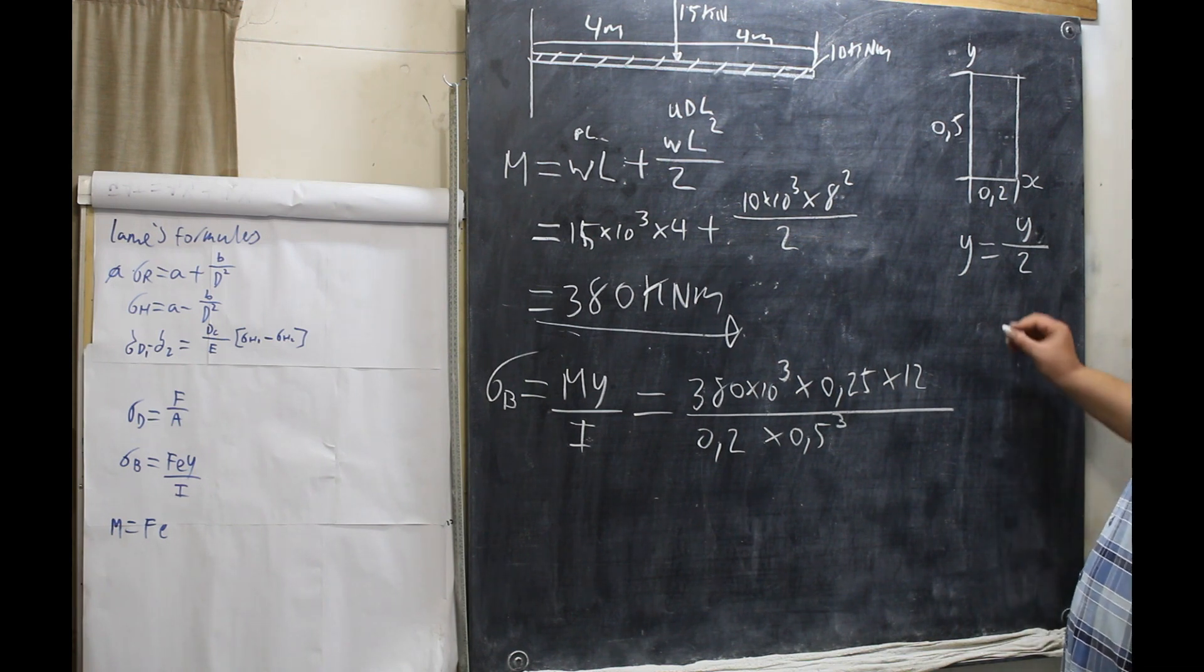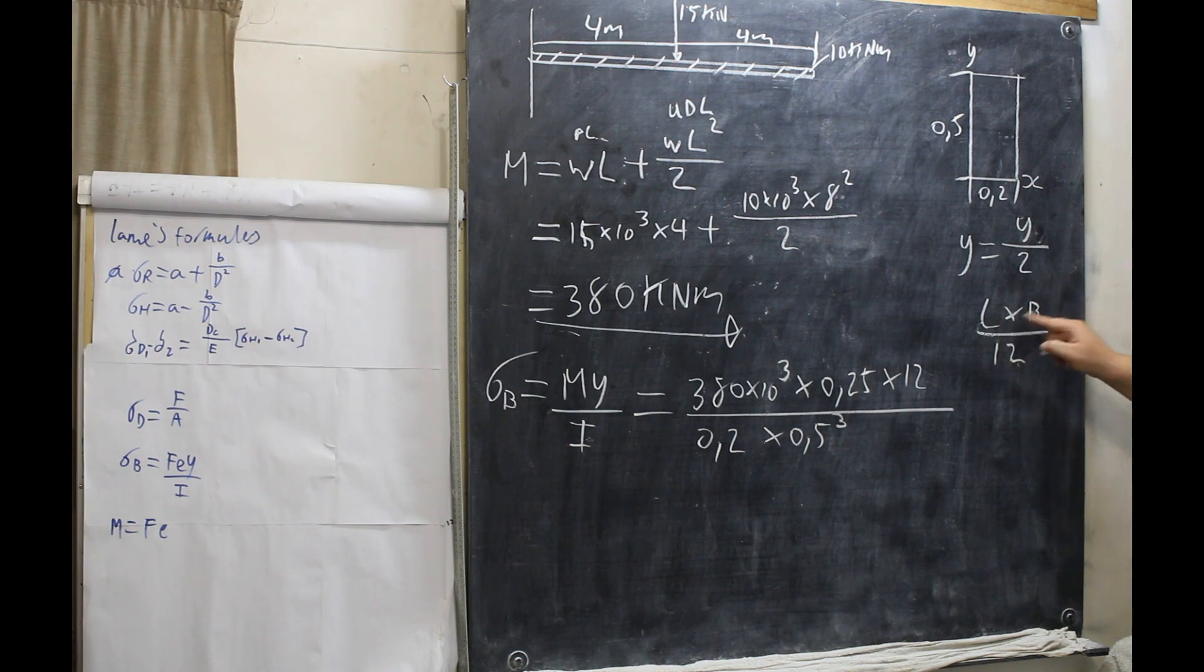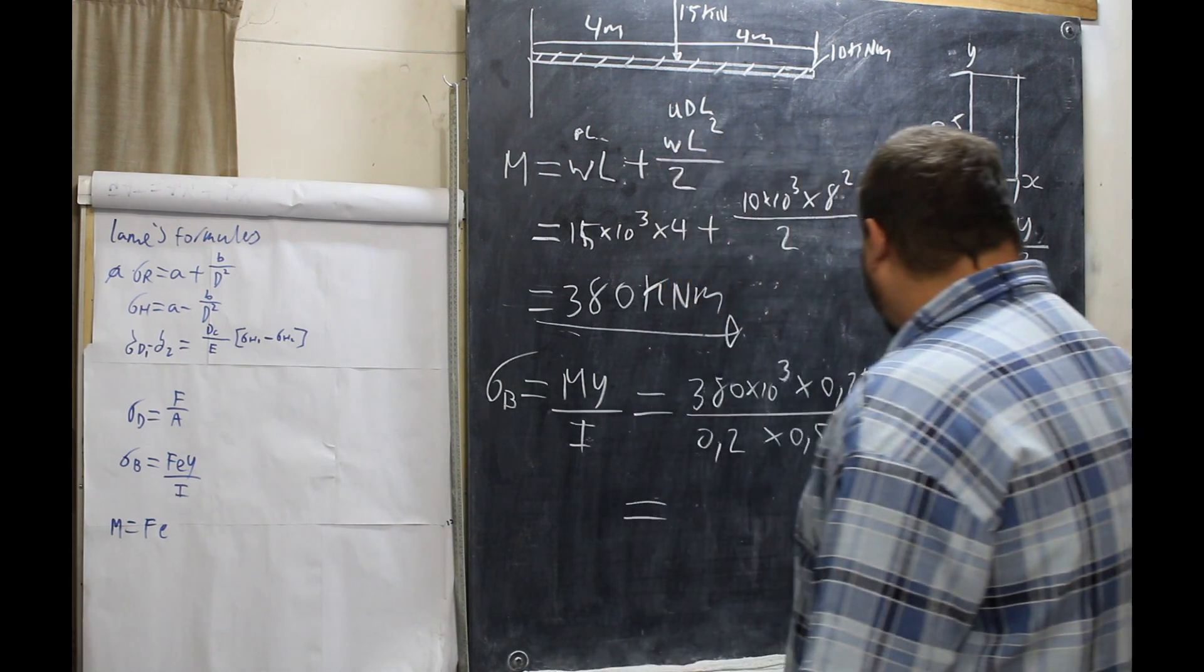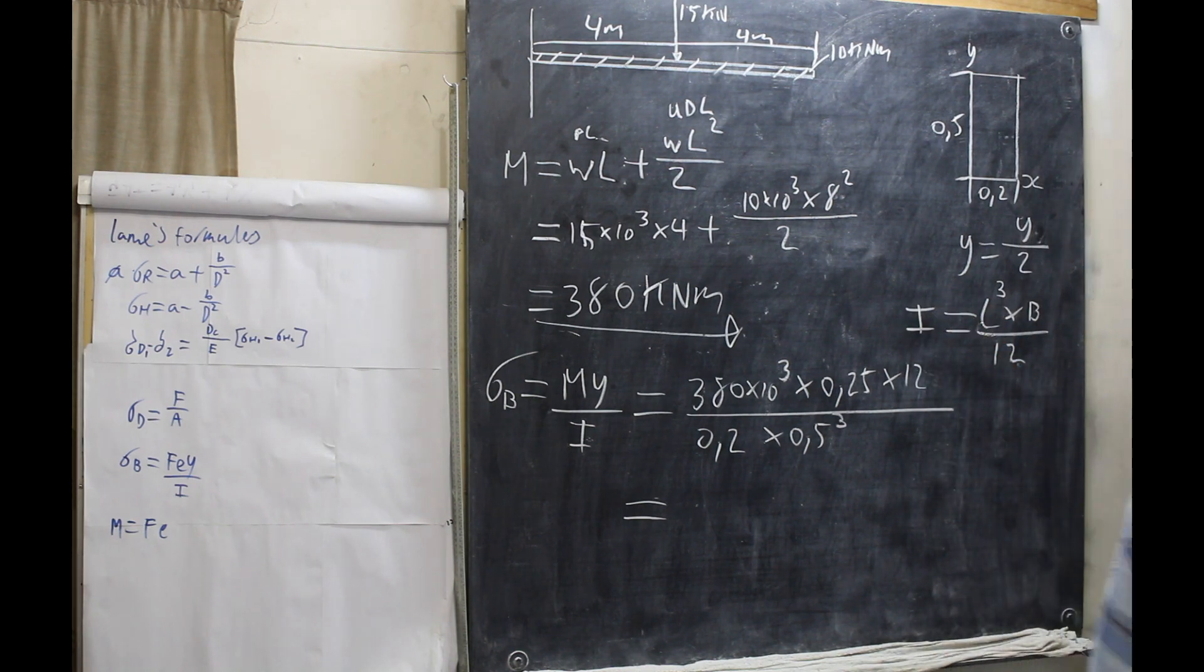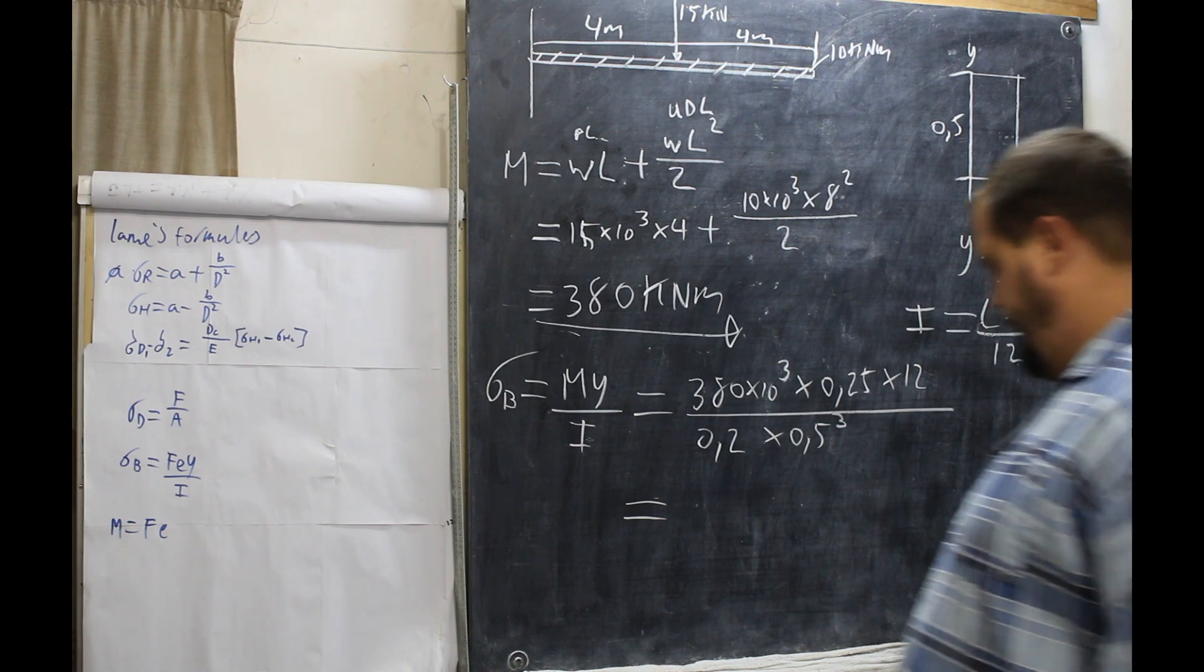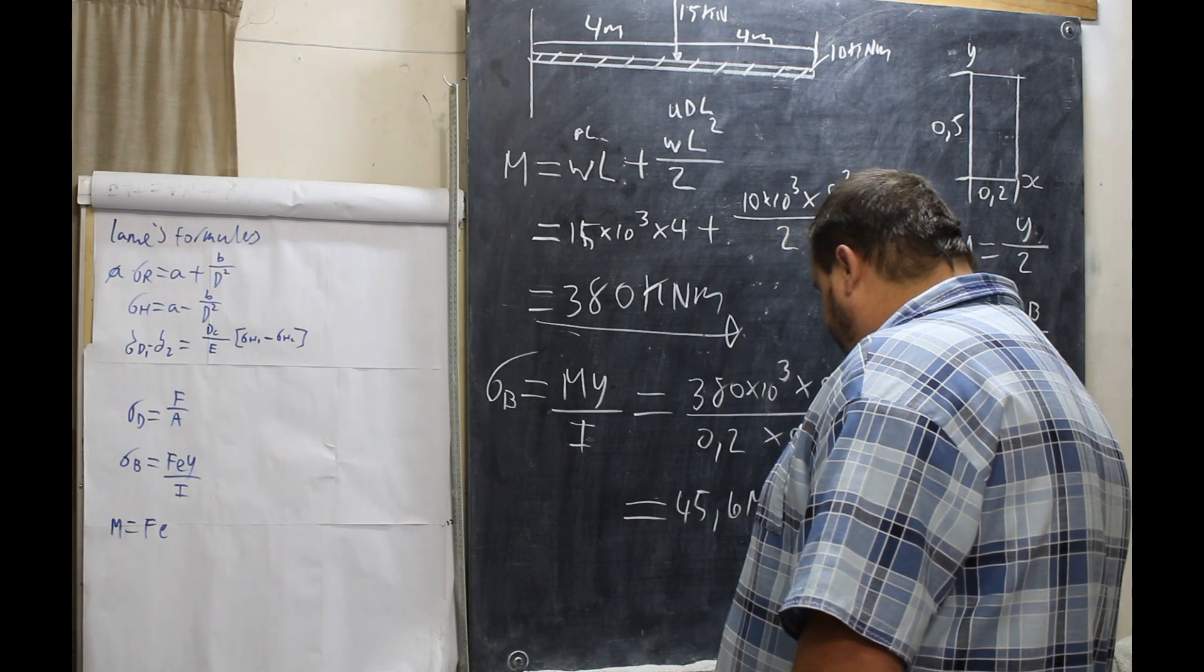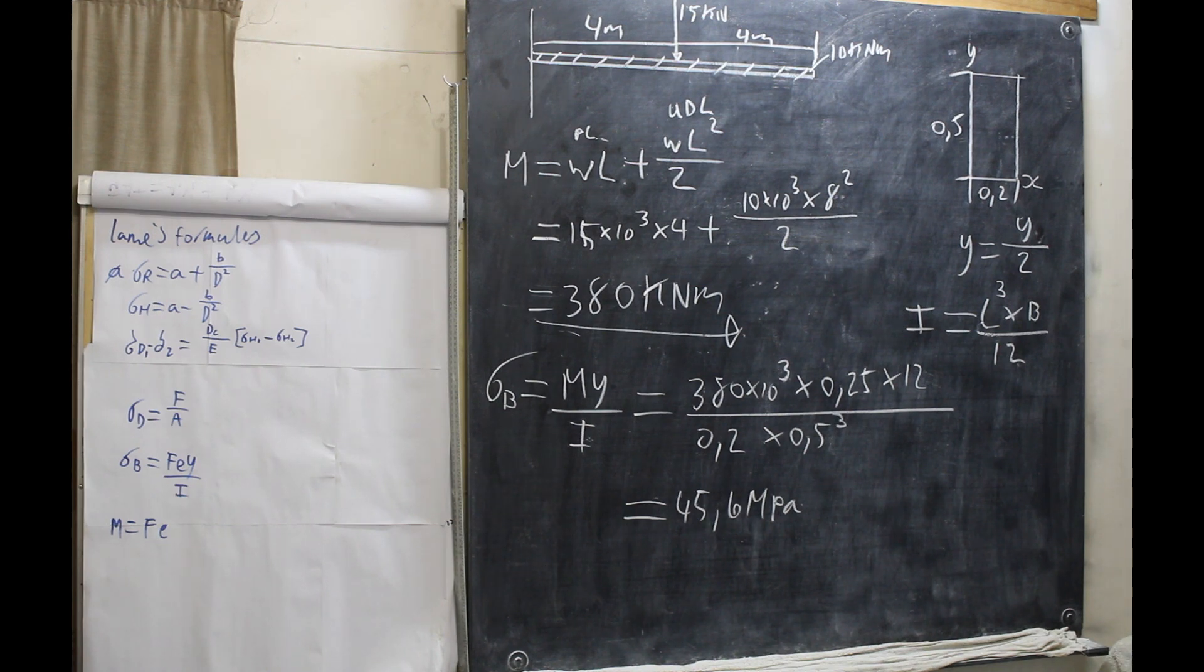I is on the bottom. It would normally be length times breadth over 12. Length over breadth. Length is to the power 3 in this particular case. So this comes out to, so this equals I by the way. So what we have here is 45.6 megapascals. That is our stress in the beam.